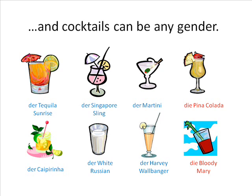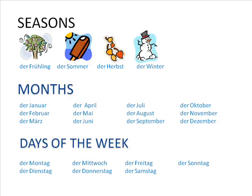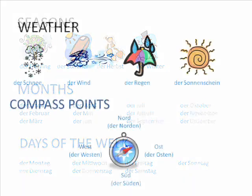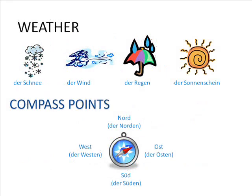Three more useful masculine rules are that all names of seasons, months, and days of the week are masculine. All words referring to types of weather, such as snow, wind, rain, and sunshine are masculine. And all nouns referring to compass points are masculine, such as north, south, east, and west.